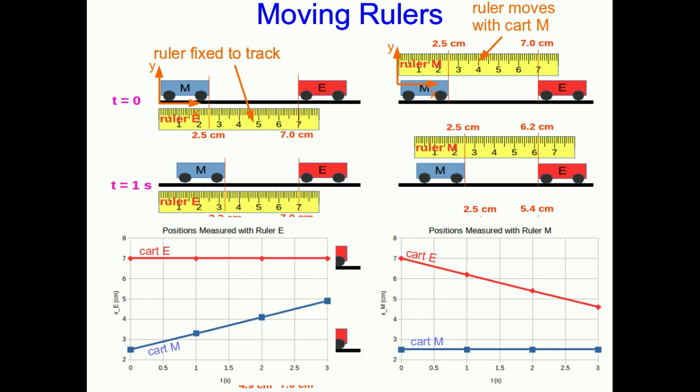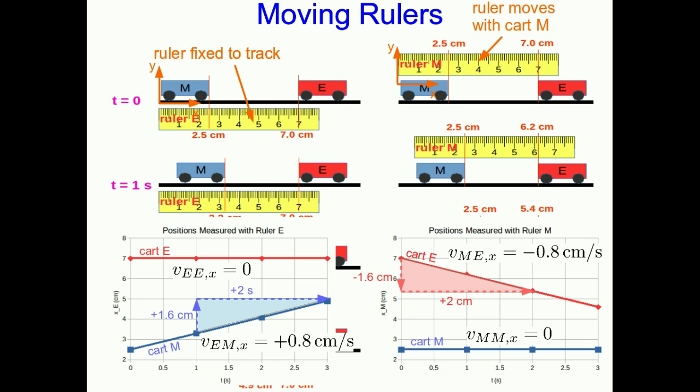We can now measure the positions of these carts relative to both rulers. Have a look at the measurements I've made and verify these graphs. In the graphs, cart E isn't moving relative to ruler E, and cart M isn't moving relative to ruler M, so those x-components of velocity are both zero. Then we can pull the other velocities off the graphs, and as we would expect, the x-component of one of these velocities is just the negative of the other, as we'd expect from our relative motion equation.